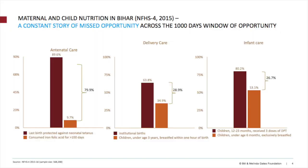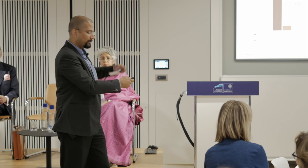Nutrition is a missed opportunity across the pre-conception, antenatal, delivery and post-delivery periods. From the example of antenatal care in Bihar using government NFHS-4 data: it's the same mother, same service providers, same opportunity — yet TT immunization is as high as 90%, but IFA coverage is not even 10%. Similarly, during institutional deliveries in Bihar, which has reached 64%, timely initiation of breastfeeding is only around 35%. Nutrition is falling between the cracks because of these missed opportunities.